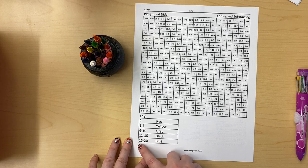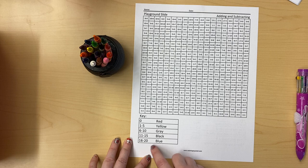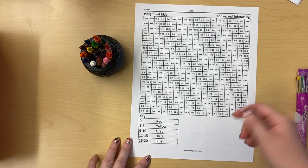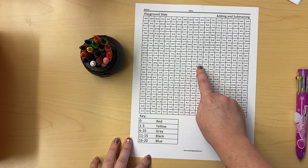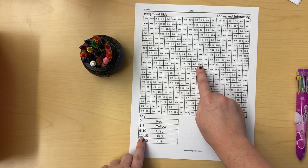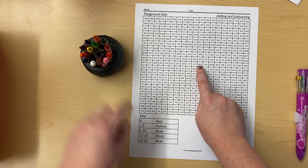And 16 to 20, that's 16, 17, 18, 19, 20, is gonna be blue. So let me just pick a square and see what I'm gonna color it. 10 plus 3. 10 plus 3 is 13. 13 is between 11 and 15, so I'm gonna color that square black.